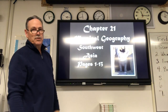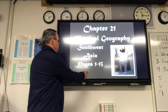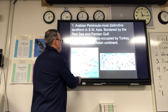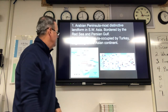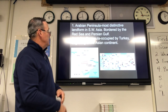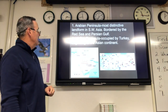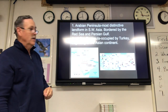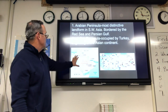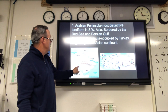We'll start with Chapter 21, Physical Geography of Southwest Asia. The Arabian Peninsula is the most distinctive landform in Southwest Asia, bordered by the Red Sea and the Persian Gulf. And the Anatolian Peninsula is occupied by Turkey — this is the beginning of the Asian continent.